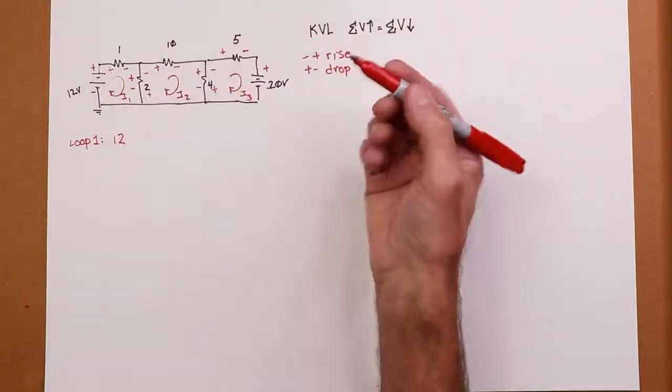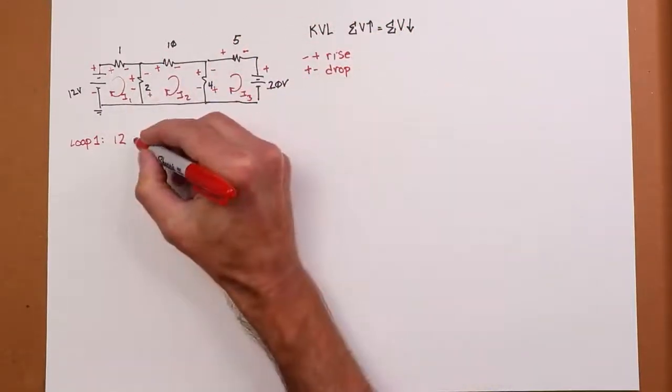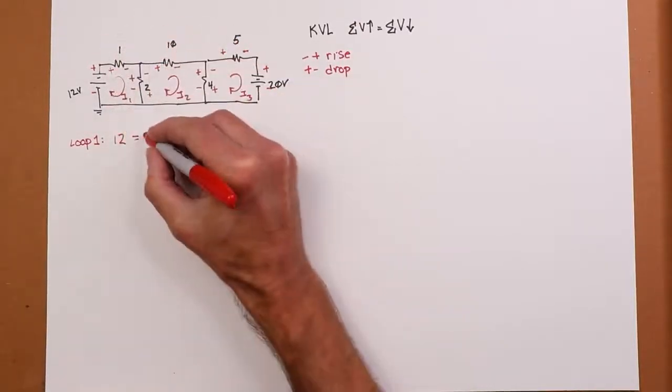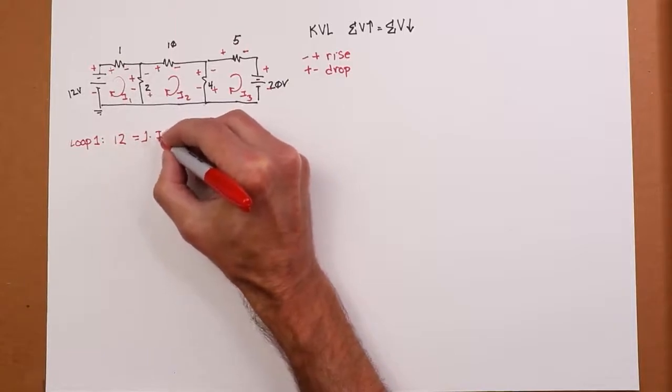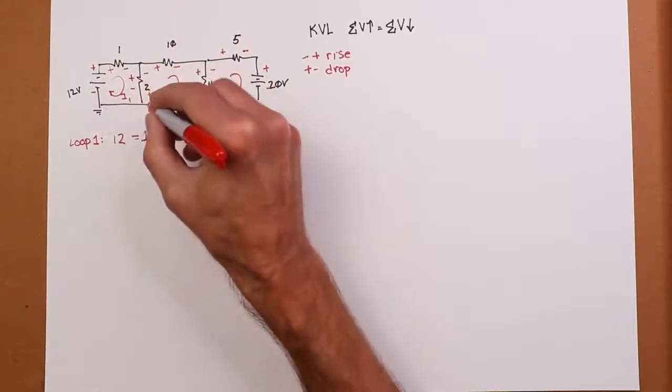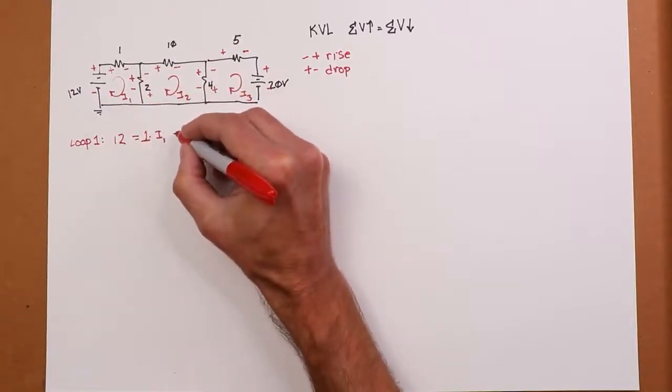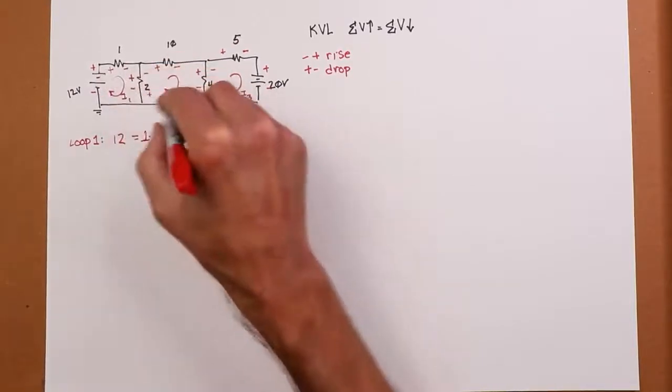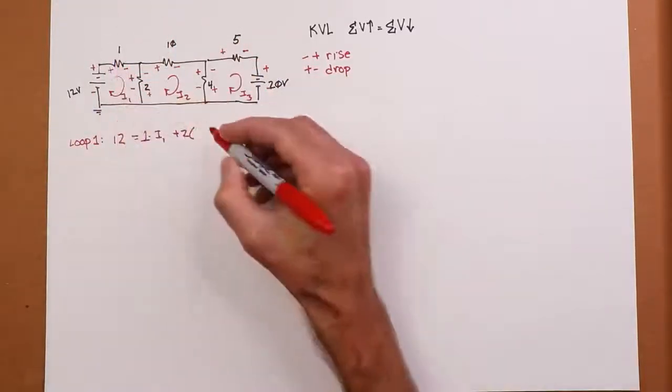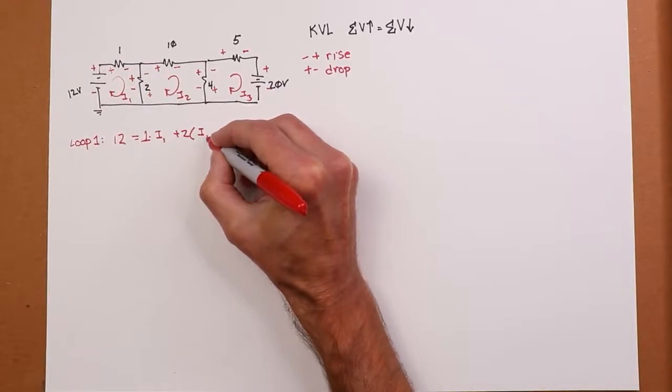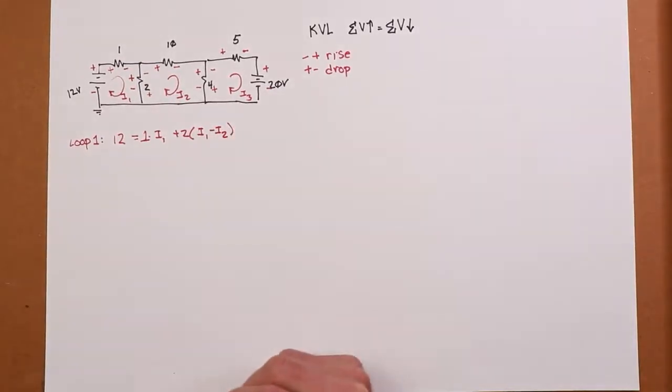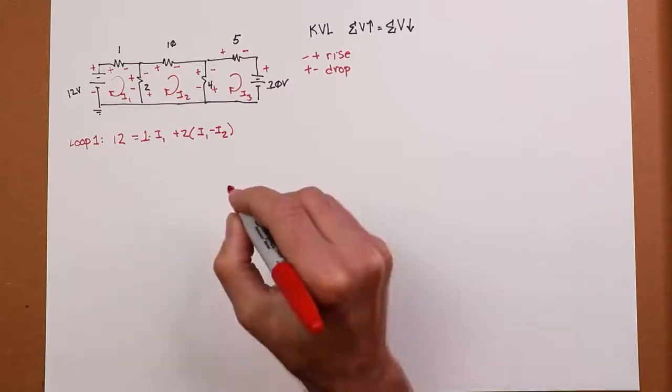So, I have 12 volts. Given my convention of the current flowing in this clockwise direction, plus to minus winds up being a drop, minus to plus would be a rise. Sum of rises must equal sum of drops. So minus to plus, there's 12 volts. Then I have a couple of drops - the drop across R1, and then the drop across R2. The drop across R1 is the current through it times R1, which is 1 ohm times I1. The drop across R2 is 2 ohms times the current through it.